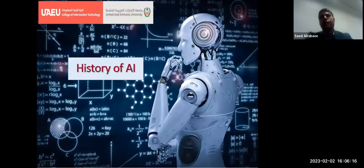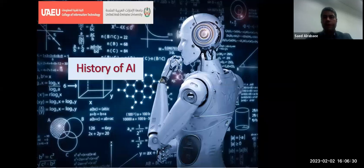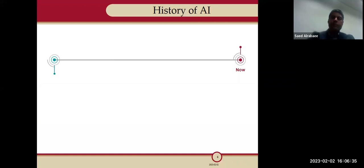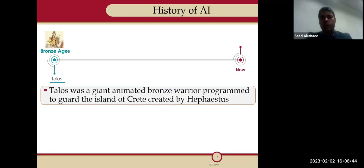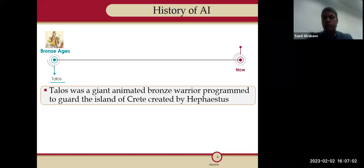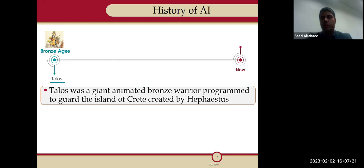Let's think about the history of AI. You may be surprised to know that the initial thought was in the Bronze Age. The Greeks were thinking about a giant animated bronze warrior called Talos, which was basically programmed with the goal of guarding the island of Crete, created by Hephaestus. Talos was honestly just an imagination, but they didn't know that this kind of animation would one day come true.